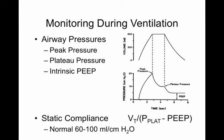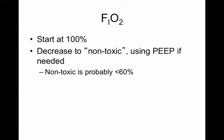We monitor for over-distension using airway pressures: the ventilator pushes in a tidal volume generating a peak pressure, flow stops giving a plateau pressure, then the breath comes out leaving end-expiratory pressure. We focus on plateau pressure. Compliance (normal above 60 mL/cmH2O, severe ARDS down to 30) can also be tracked. For FiO2: intubate, start at 100%, then decrease to non-toxic levels—generally we'd like to get FiO2 below 60-65% before we stop worrying about oxygen toxicity.